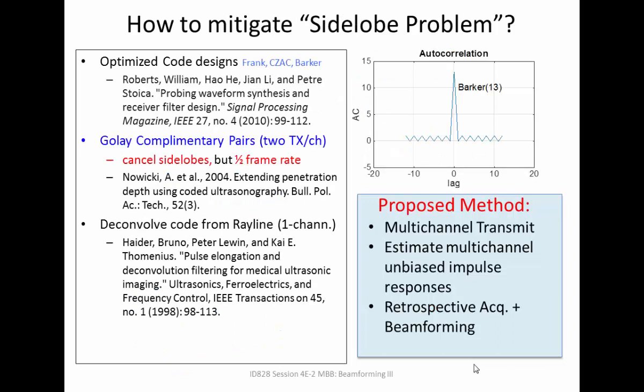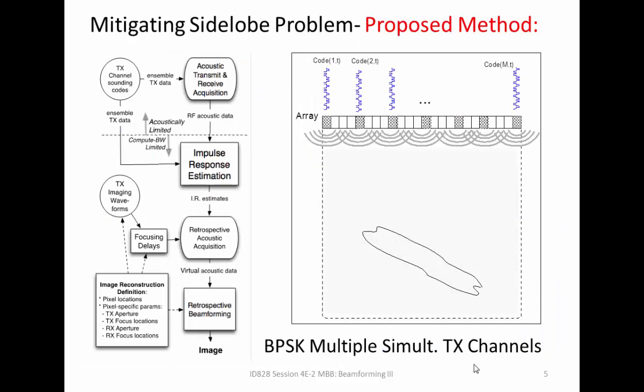We'll focus on comparing it to the Golay complementary pair method of coded excitation. Basically, the idea is to transmit on individual channels simultaneously — it could be a sparse aperture — each receiving a BPSK code that we generate using a random generation tool. They're not optimized in any mathematical sense, but once generated, we treat them as known. We use this as a channel probing sequence.